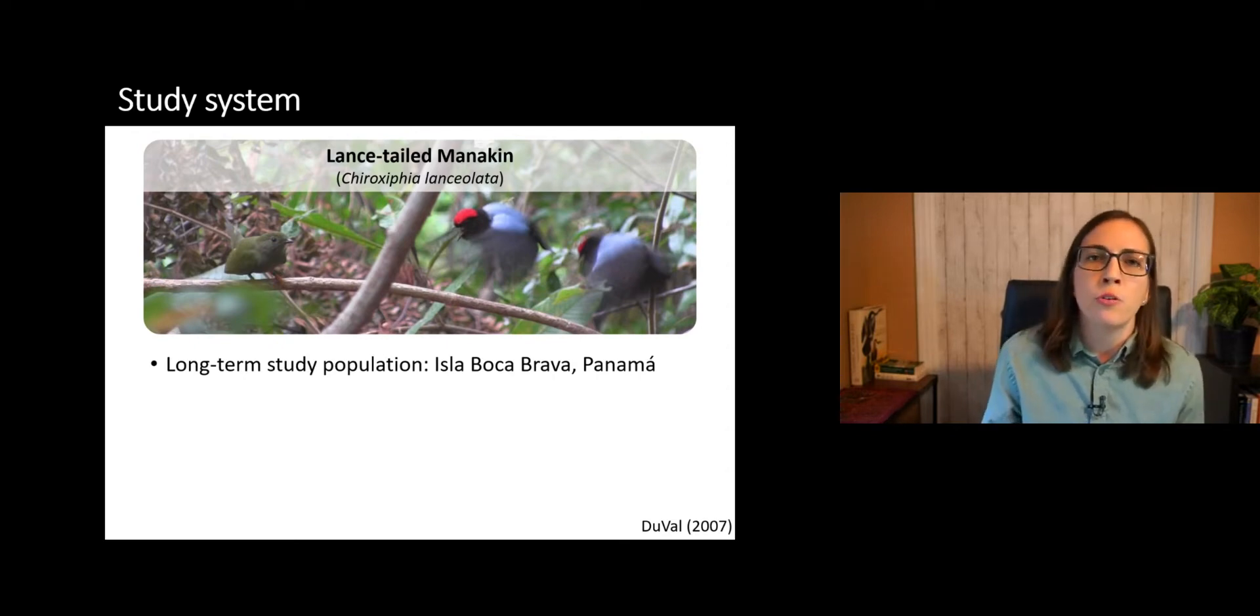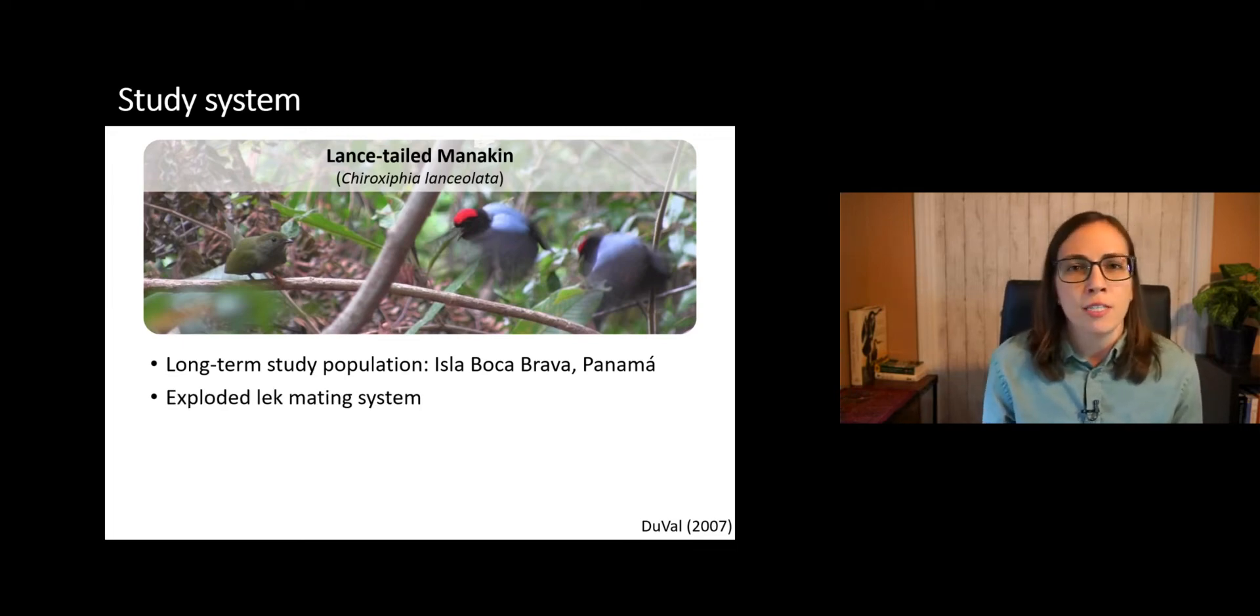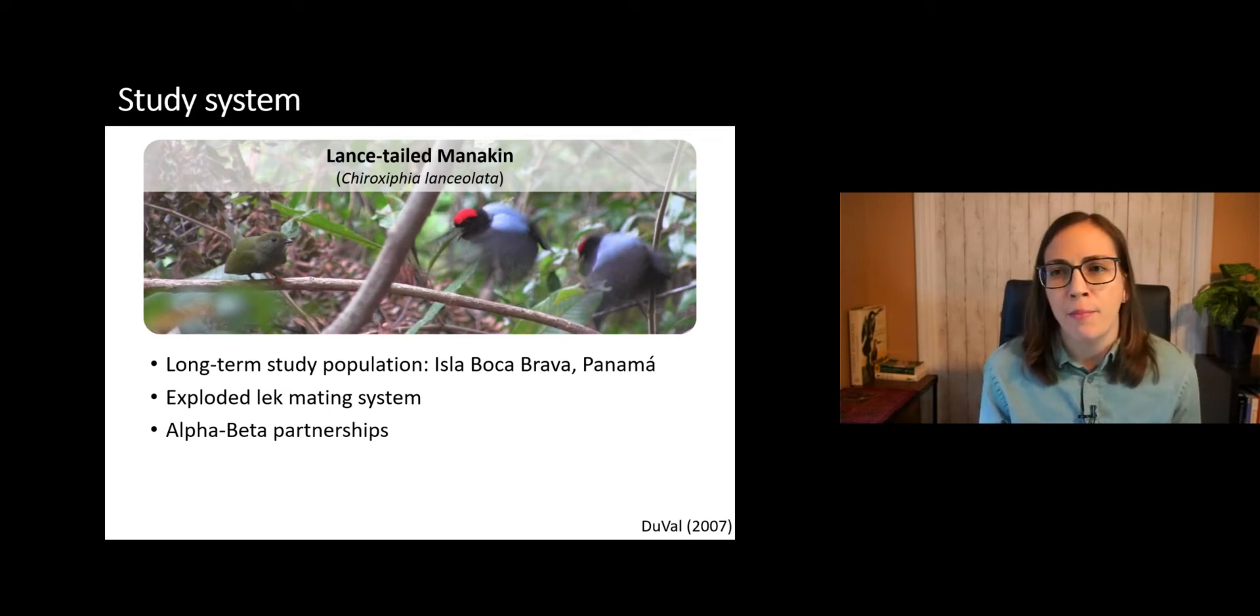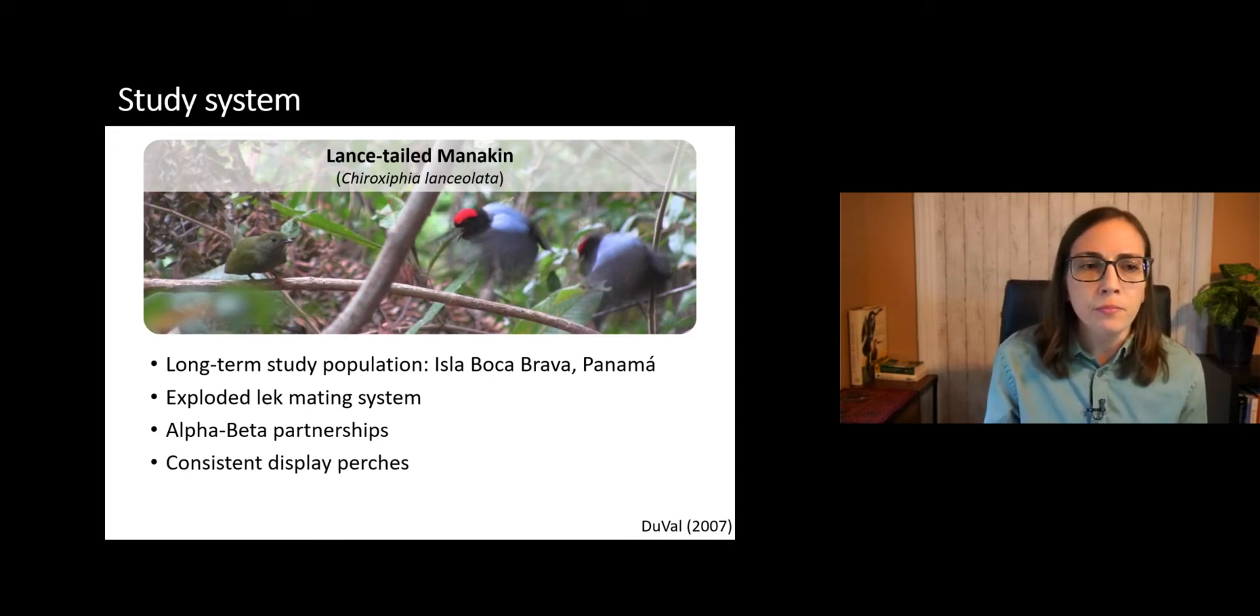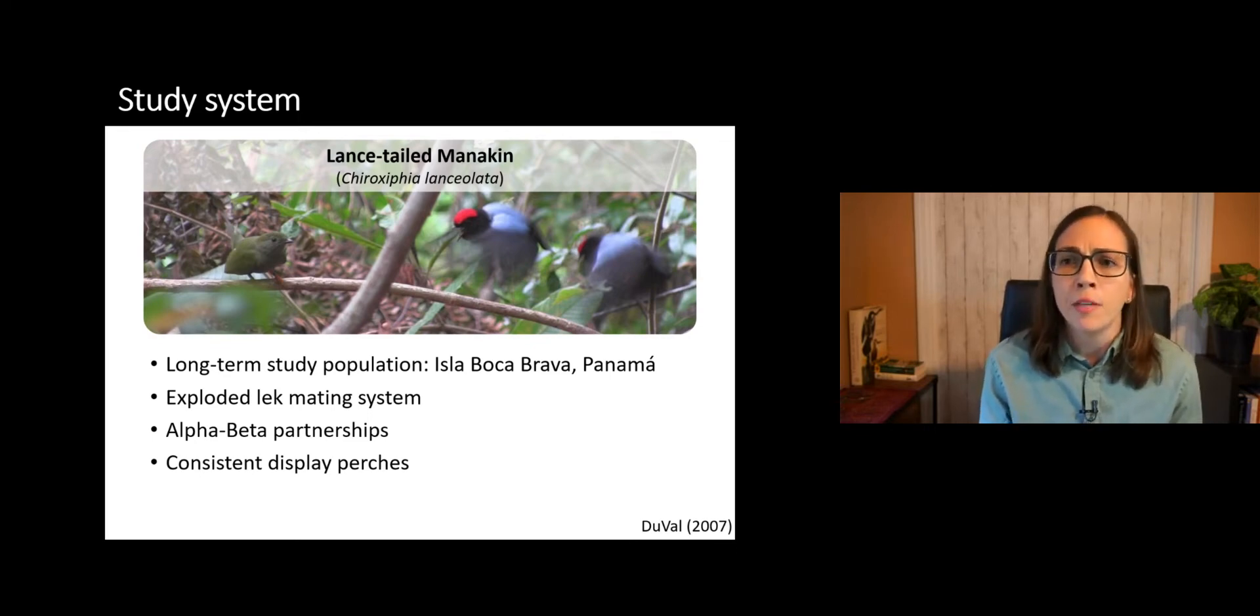We used a long-term study population where the majority of individuals are color-banded for individual identification. These birds have an exploded lek mating system where females shop among visually separated display sites for a mate. And males form relatively long-term alpha and beta partnerships, and they perform cooperative displays for females. But with rare exception, only the alpha ultimately gets to mate with the female. Males display on individual display perches, which consists of a horizontal sapling relatively close to the ground, which you can see an example of in the photo here. They typically use the same display perch throughout the breeding season, which allows us to set up video cameras in front of the display perches to capture all of their courtship activity.